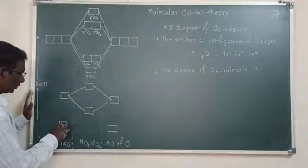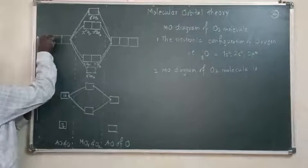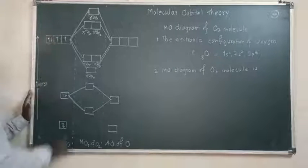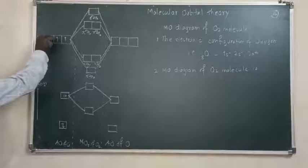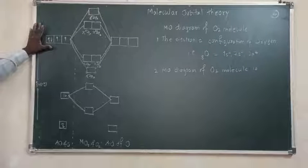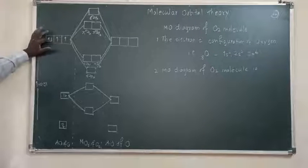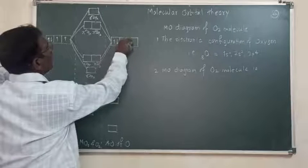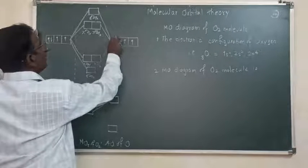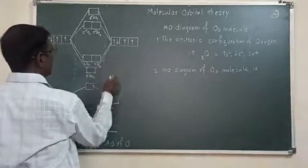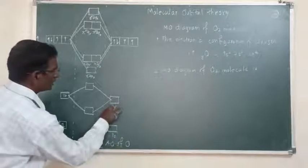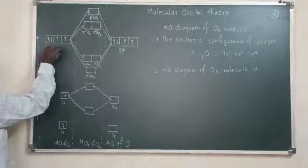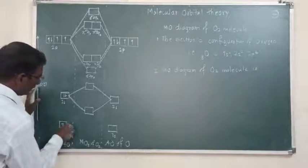Then, the electrons from 2s2 and 2p4 are filled in the molecular orbitals. When 2 electrons are present, they are shown with paired arrows. One electron is shown as a half-headed arrow in the downward direction. If there is only one electron, it is shown singly. We fill the 1s, 2s, and 2p electrons from both oxygen atoms.